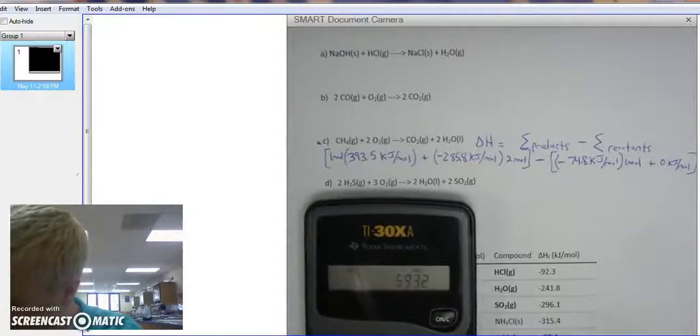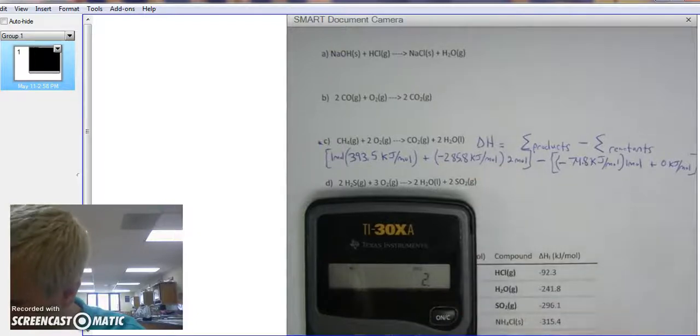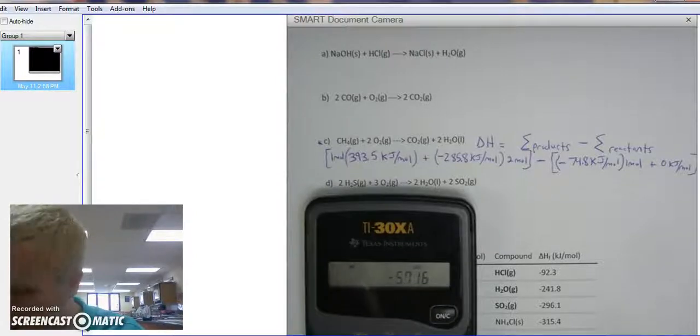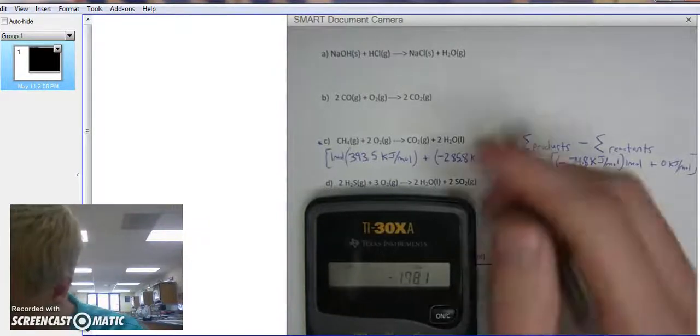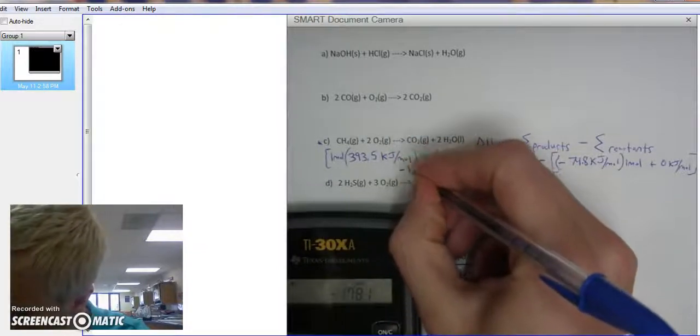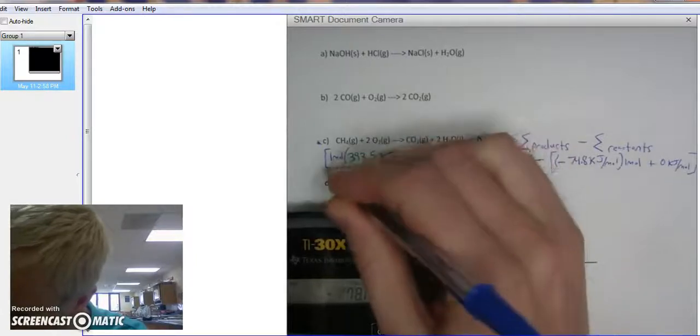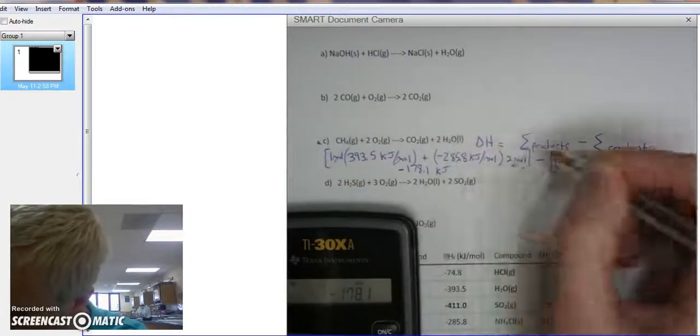So, 2 times negative 285.8 plus negative 393.5. All right, that gives me negative 178.1 KJ. The moles cancel out.